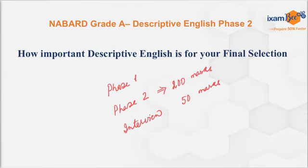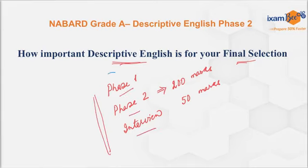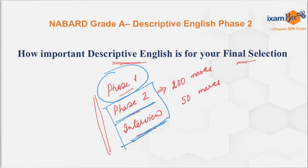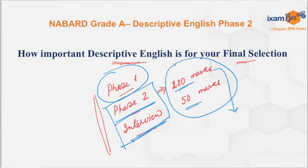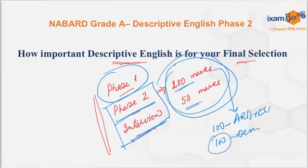To understand the importance of descriptive English in your final selection, we must know the examination scheme. NABARD Grade A is in three phases: phase one, phase two, and then interview. Phase one is qualifying. For your final selection, your phase two marks plus your interview marks are important. Out of 250 marks — 200 written and 50 marks interview — out of this 200, 100 is ARD plus ESI and 100 is descriptive English. So out of 250 marks, 100 marks is descriptive English.